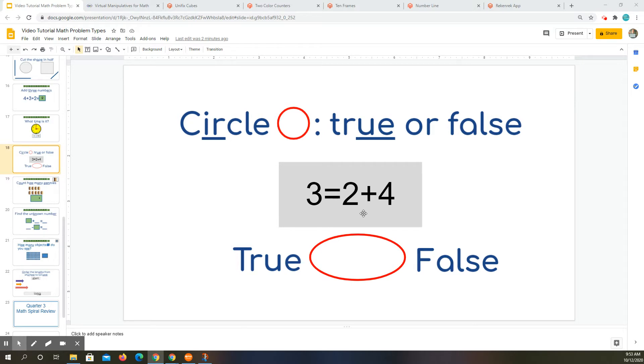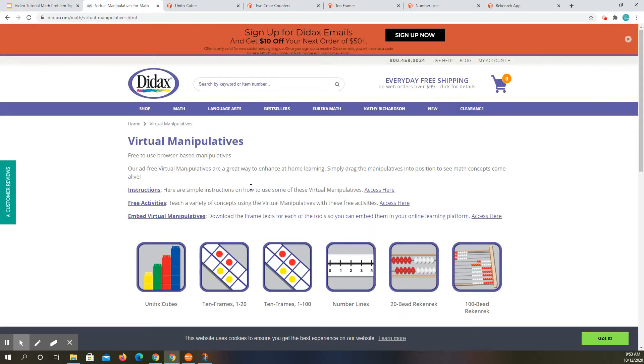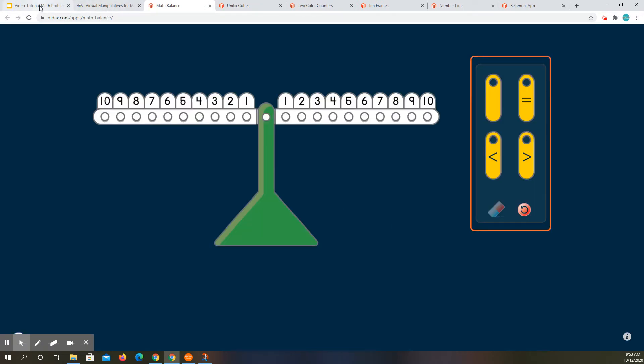It says 3 is equal to 2 plus 4. To know if it's true, then the equal side, this side and this side need to be the same. So let me come over here and I'm going to go to my balance to help me figure this one out.